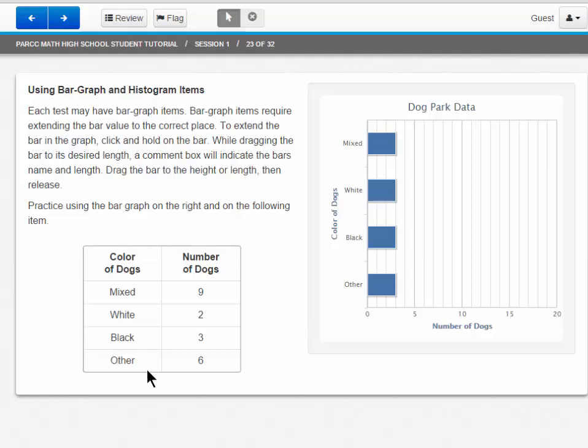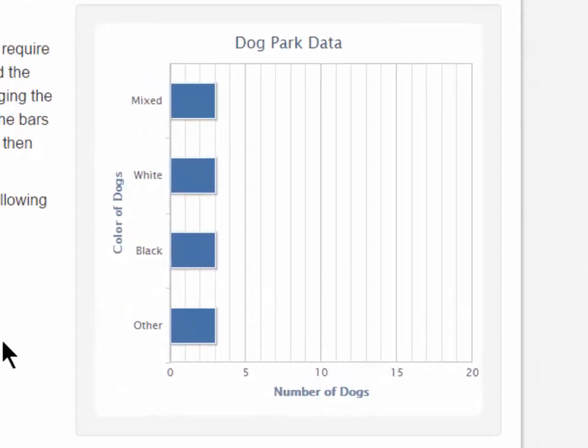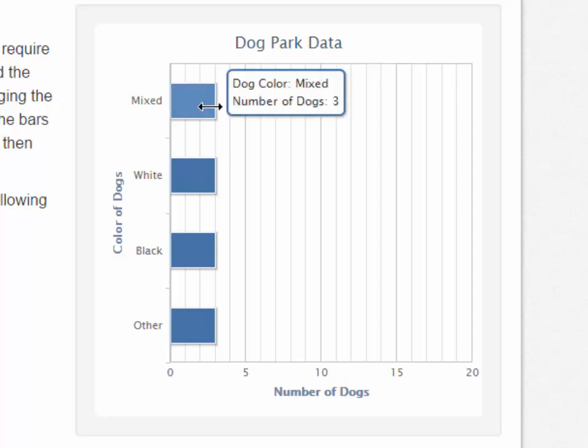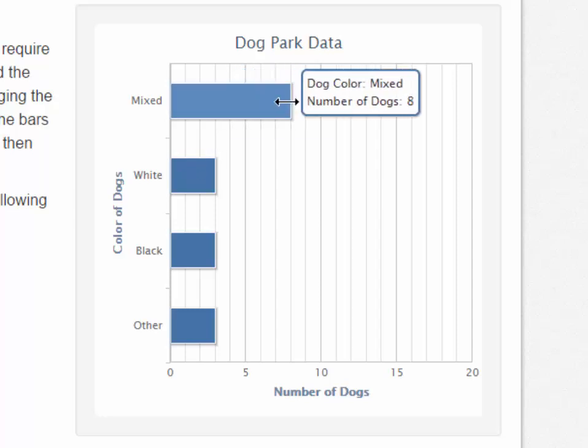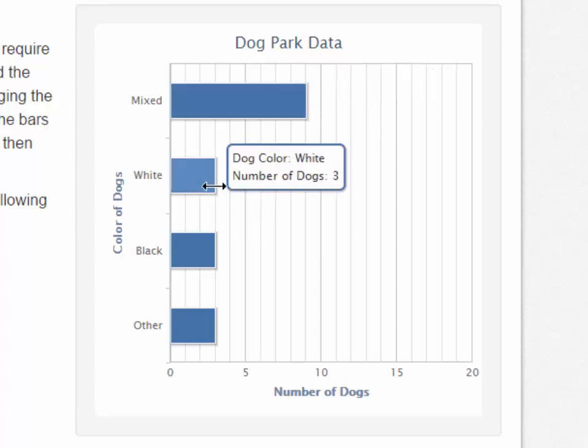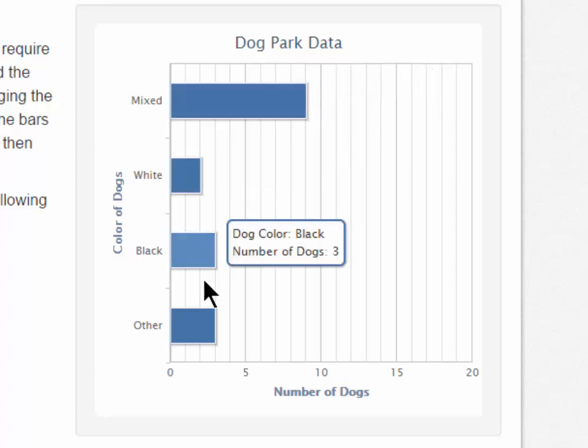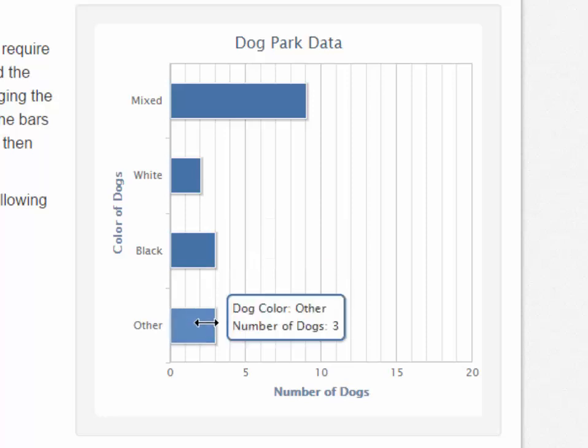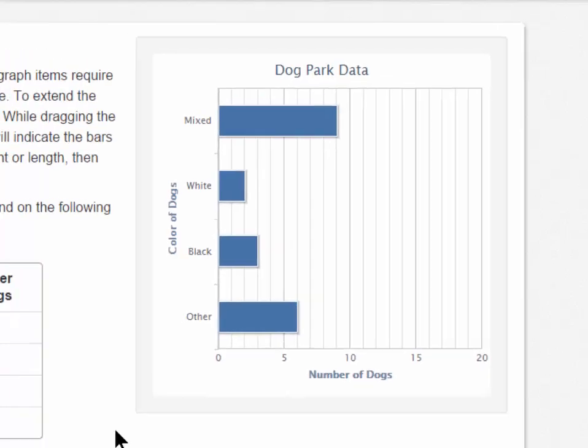Let's take a look at this table. We have color of dogs and number of dogs in columns left and right. For mixed dogs, we have nine. We can click and drag to nine. You'll notice a window pops up as I'm dragging, showing me exactly where I am dragging the bar. I have answered the item.